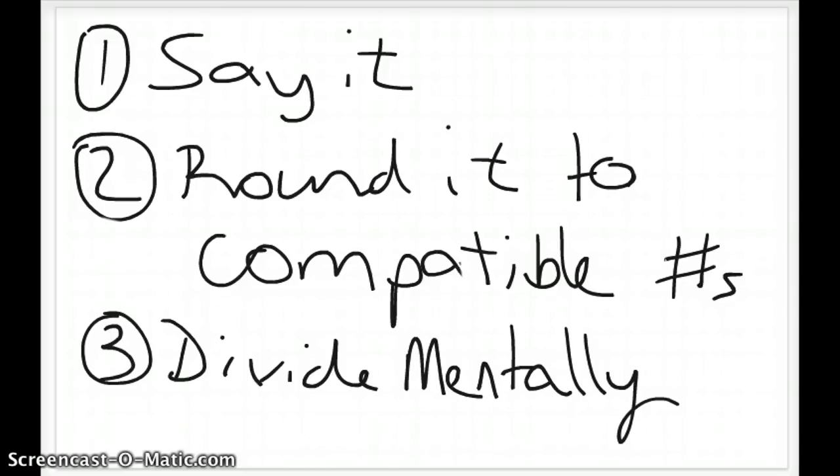All right, so when you're using compatible numbers, finding a quotient using compatible numbers, the first you should do is say it in your head and then round it to its compatible numbers and then divide mentally. So let's just do some practice with those. When you know your multiplication facts, this makes it really easy. So if you're still struggling with those, let's make sure we keep practicing.